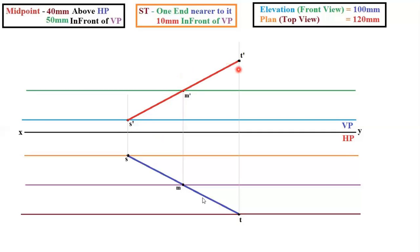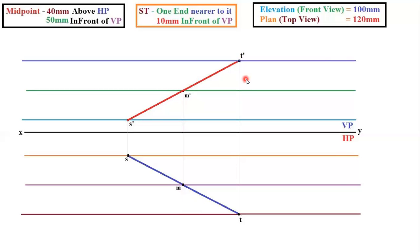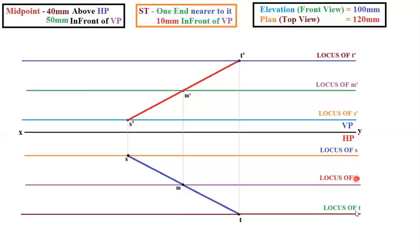T is 120 mm, which is your top view. Now rub out any unwanted construction lines. Draw a locus for the remaining points. You can write: locus of T dash, locus of M dash, locus of S dash, locus of S, locus of M, and locus of T. Write all the loci.